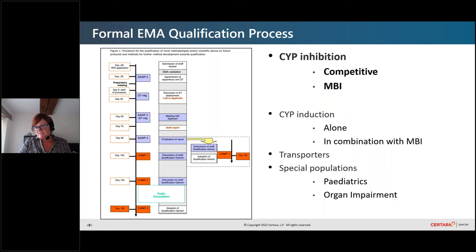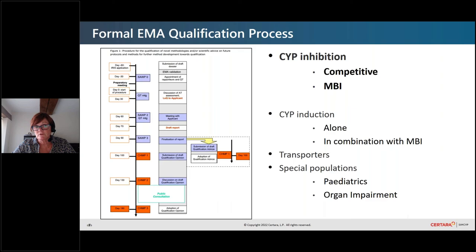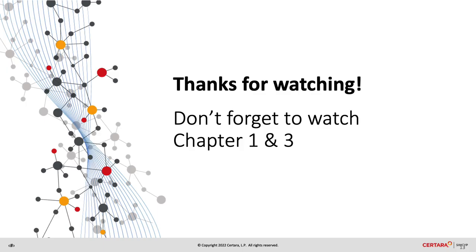We will go through the same process for CYP induction — identifying studies, collating examples from the literature for interim use, and eventually pursuing formal EMA qualification when enough relevant examples are available. In the meantime, the question is what can we do with respect to special populations.